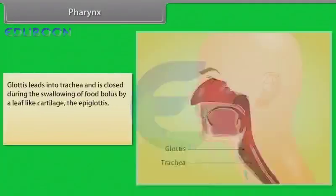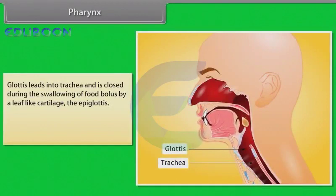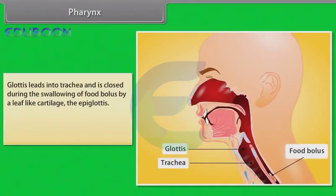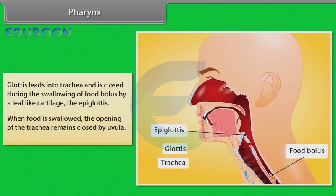The laryngopharynx is the lowest part of the pharynx and has two apertures: the glottis and the gullet. The glottis leads into the trachea and is closed during the swallowing of the food bolus by a leaf-like cartilage called the epiglottis. When food is swallowed, the opening of the trachea remains closed by the uvula.